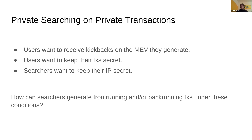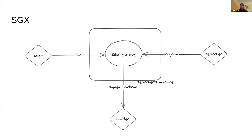Since we're in the area of private computing here, an obvious first step is SGX. When I say SGX here, I use it synonymously for a trusted execution environment. In a very simple setting, the user's input is a transaction — the input to an enclave. The searcher inputs a program within the SGX enclave to run a program that takes the searcher program and executes it upon the transaction. It also outputs a signed back-running transaction that is sent to the builder.